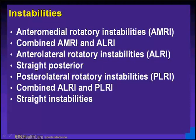We can see straight instabilities, rotatory instabilities, or combined instabilities. In individuals said to have an ACL-deficient knee, the classification from a functional disability standpoint is an anterolateral rotatory instability, indicating that the direction is anterior and it's the lateral tibial plateau that rotates.